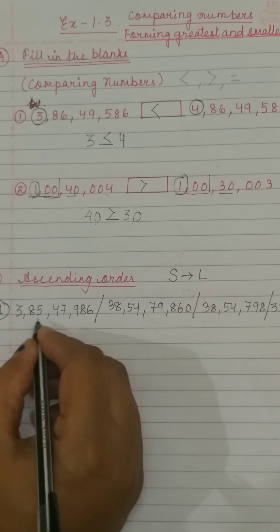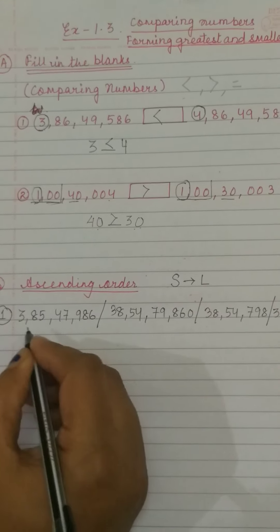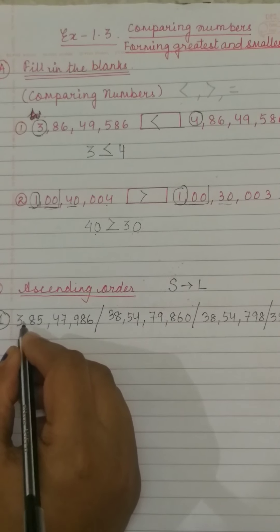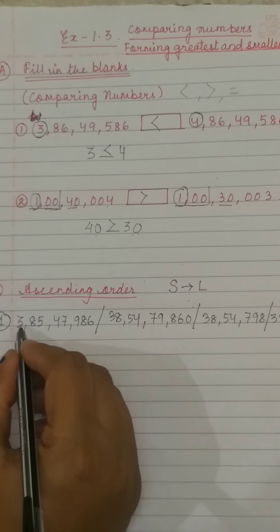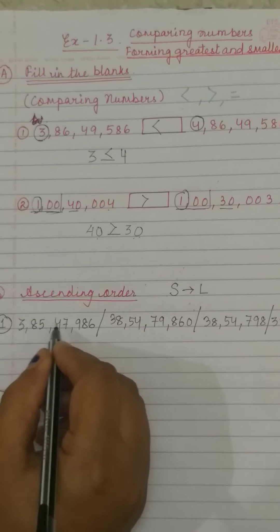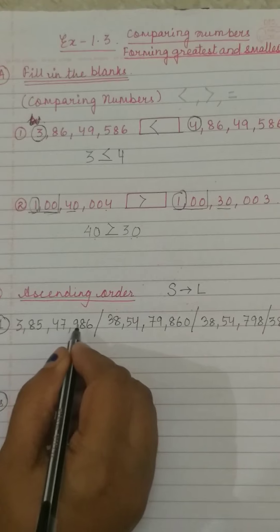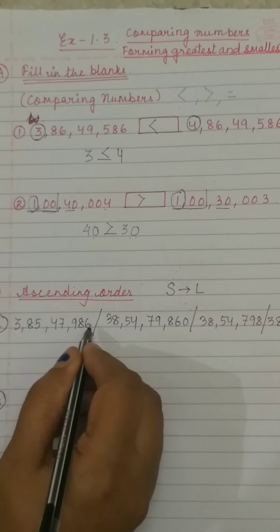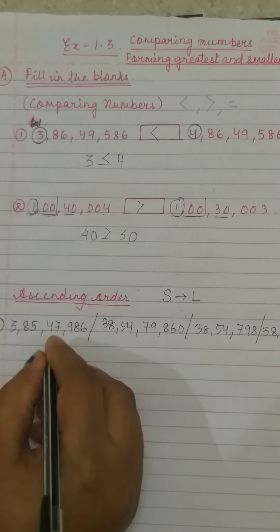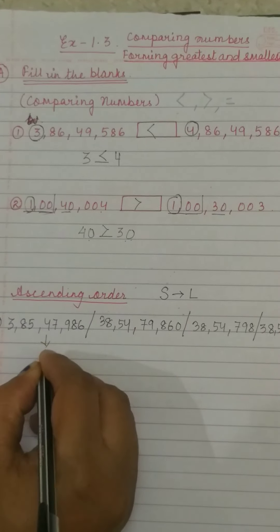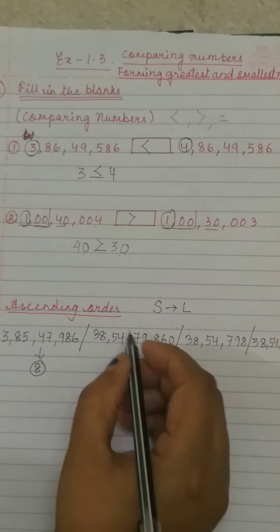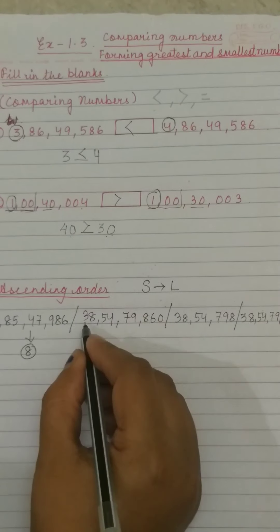So let's start. The number of digits in the first number — counting gives us 8 digits. The next number has 9 digits.